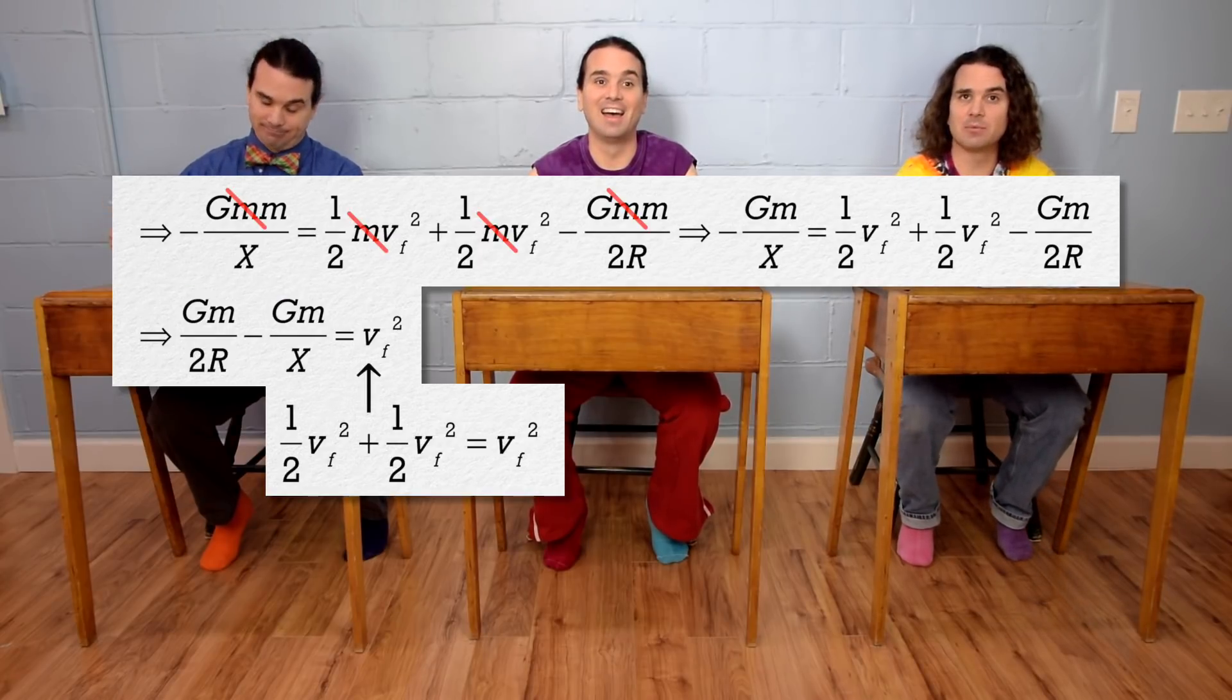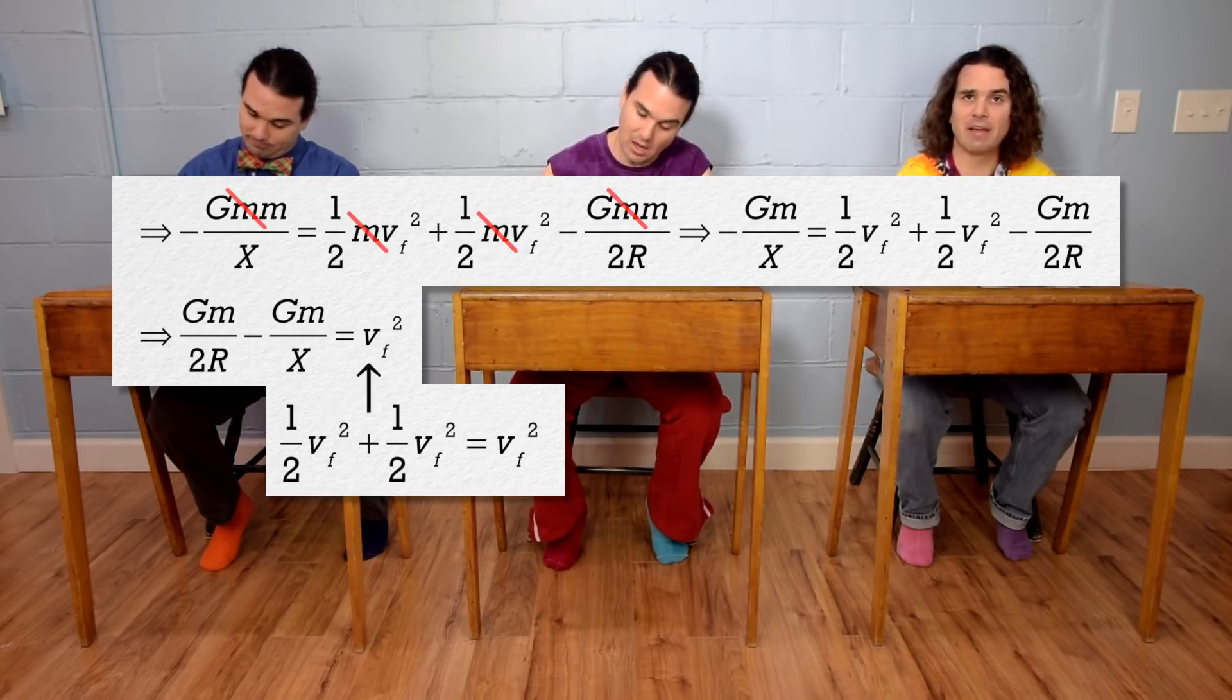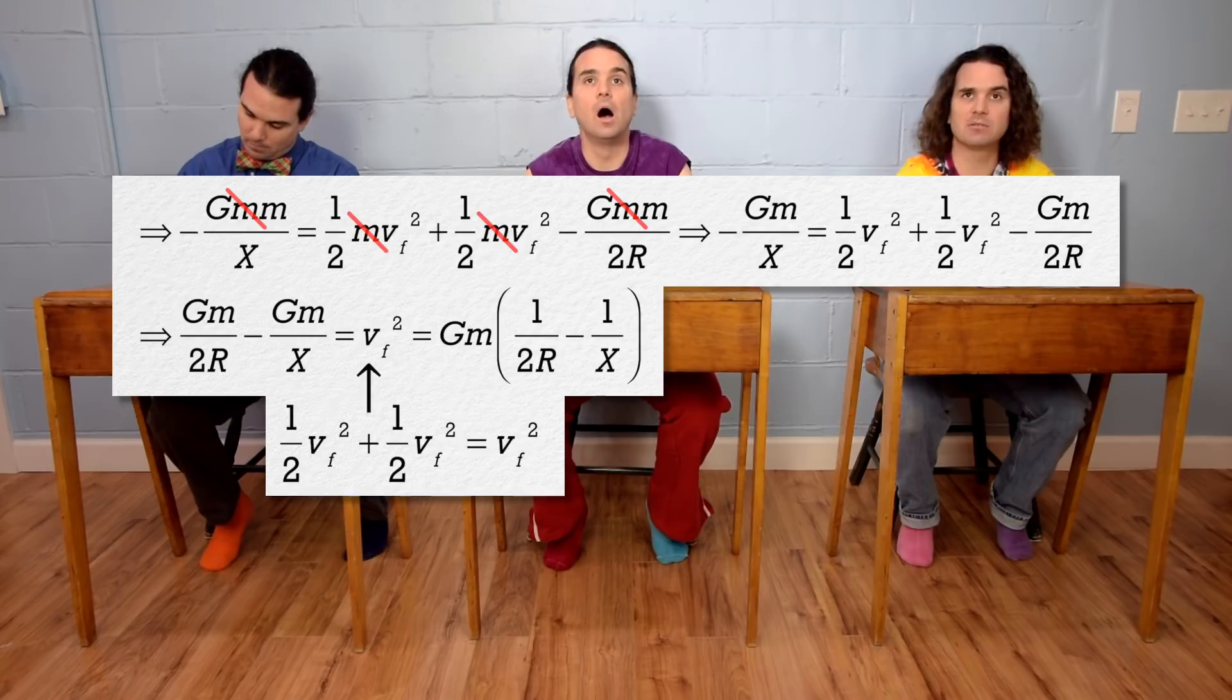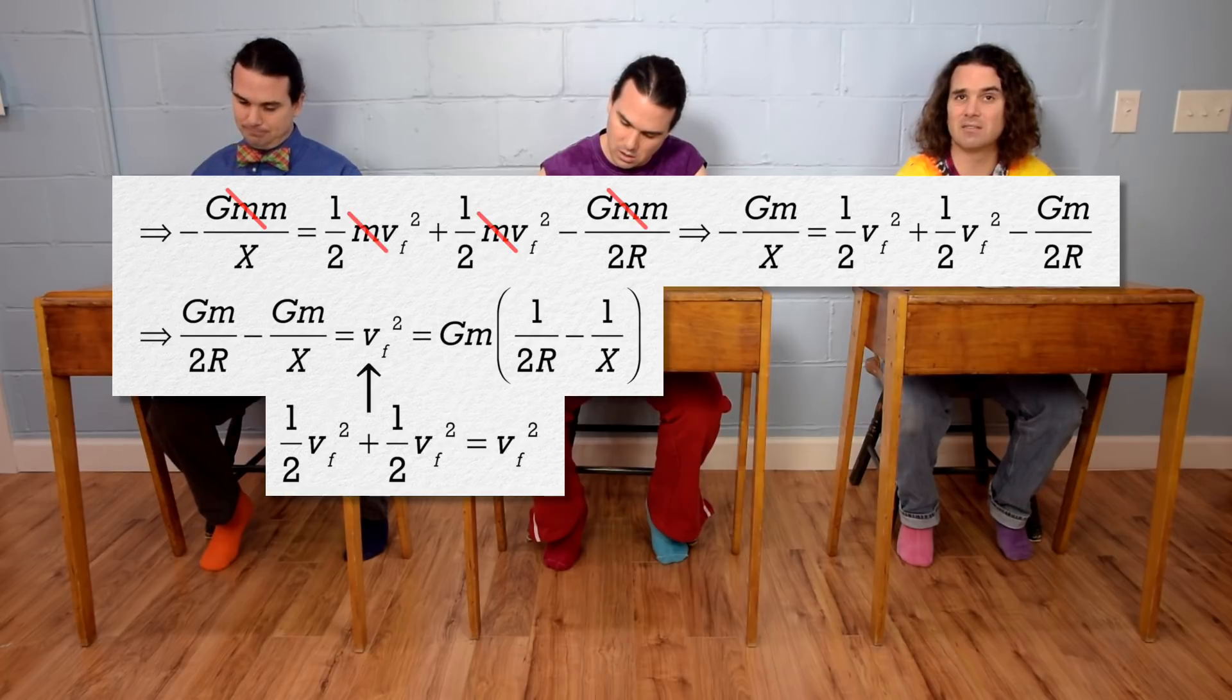Add big G times mass divided by 2R to both sides of the equation. Then we can factor out big G times mass. And in the parentheses we are left with the inverse of 2R minus the inverse of X.